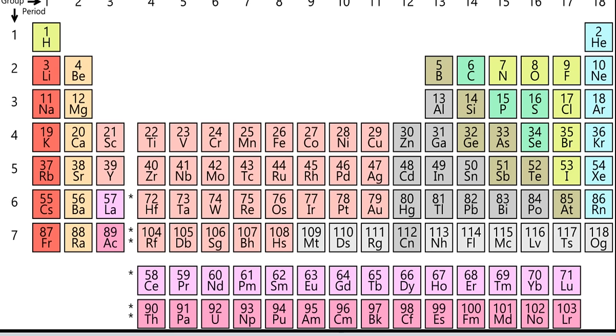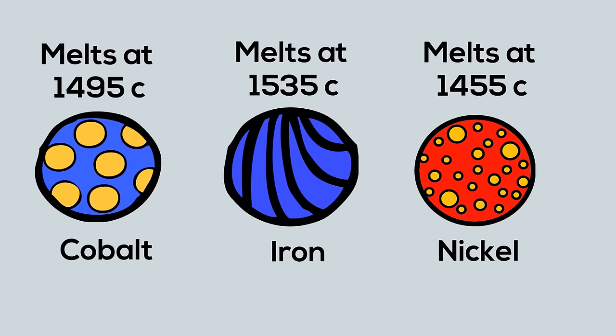The elements are arranged on the periodic table based on their number of protons. For example, sodium has 11 protons, potassium has 19. The number of protons of an element always stays the same. Each element also has its own unique set of properties.